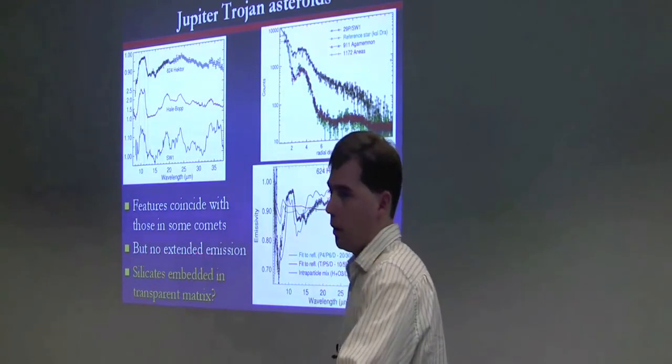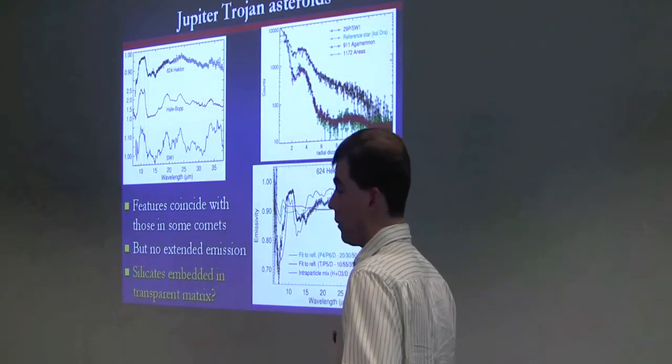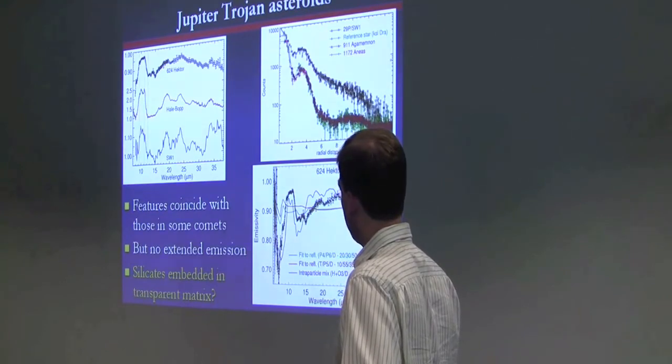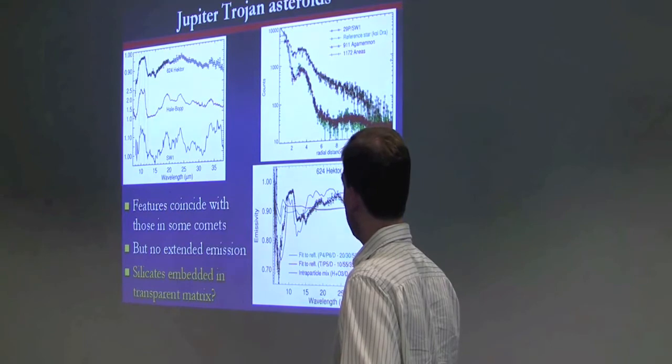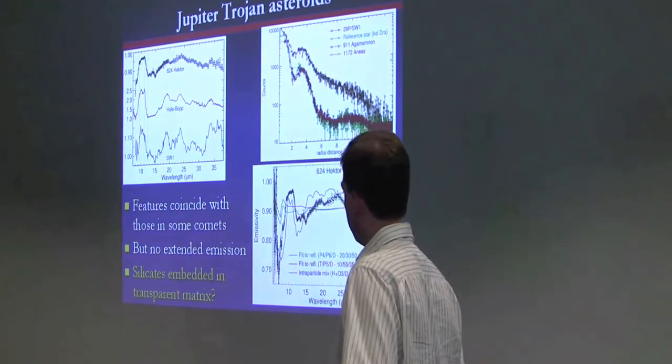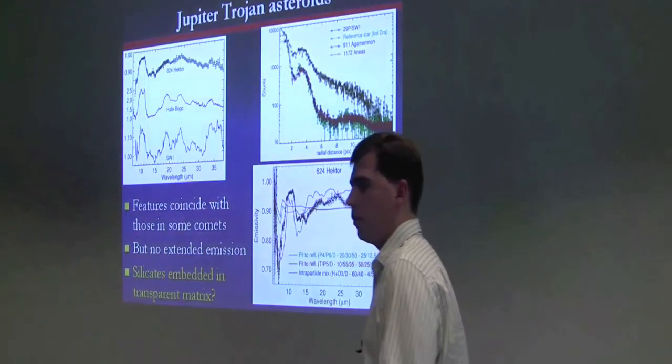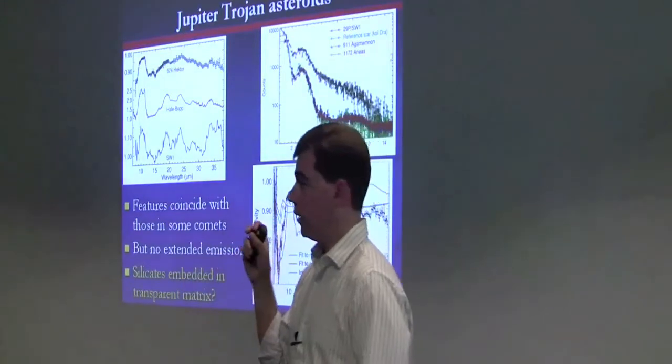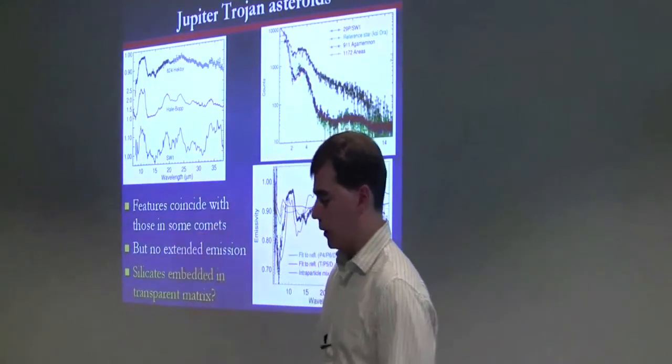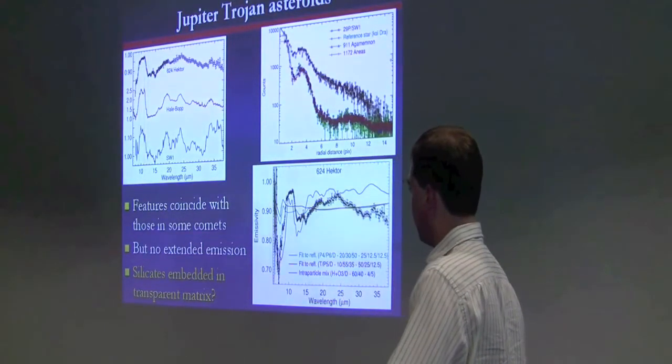But if we compare the locations of these features to features in comets, they match up pretty well. This is Hale-Bopp from ISO and even the 19 and 20 something micron feature matches up pretty well. And this is Swashman-Wachman 1, which is a comet that orbits just beyond the orbit of Neptune. So the features do coincide with those in some comets. But we're not seeing any extended emission from the Trojan asteroids. This is a plot of a radio profile actually from one of the Spitzer 16 micron images. The green is a reference star just showing the point spread function of the telescope. And this black curve is Swashman-Wachman 1, which is an active comet. You can clearly see there's extended emission. The profile does not follow the star. But the two Trojan asteroids, the profiles are completely stellar. There's no extended emission.